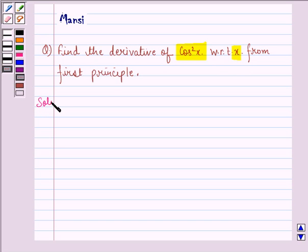Let us see the solution to this question. First of all, let y be equal to cos square x. We call this equation 1.